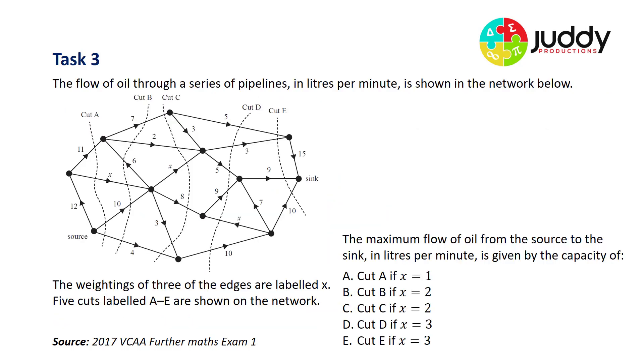Our final example number three looks a bit more complex but let's get into it. The flow of oil through a series of pipelines in liters per minute is shown in the network below. The weightings of three of the edges are labeled X. Five cuts labeled A to E are shown on the network: Cut A, cut B, cut C, cut D and cut E.